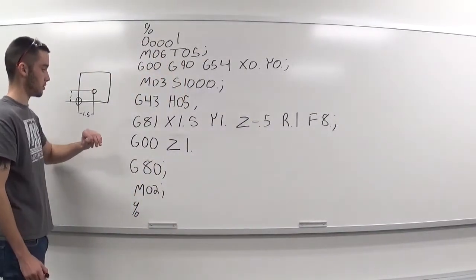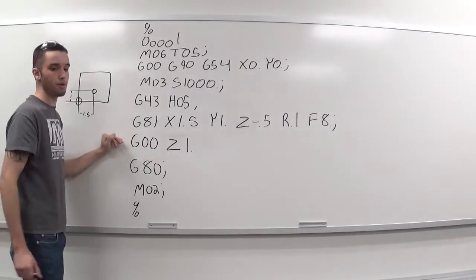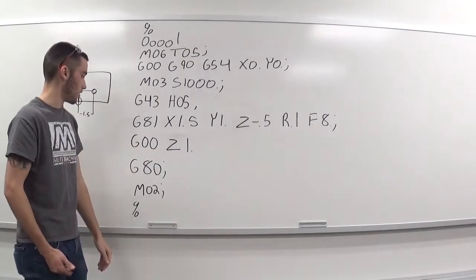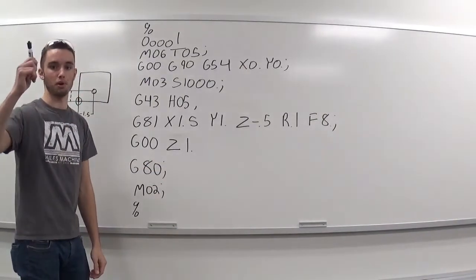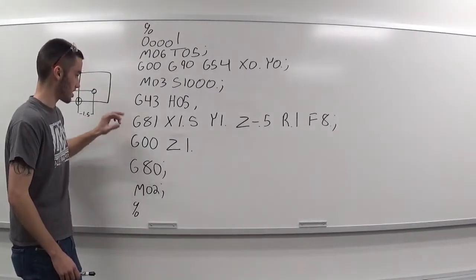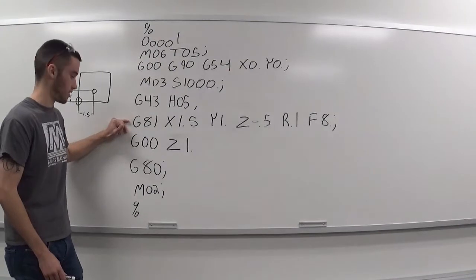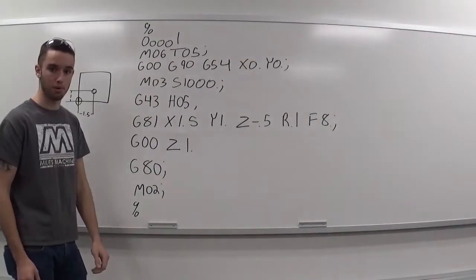Then we'll be doing G00, Z of 1 inch. This block code right here isn't necessary, but I just like to do it for safety reasons, just to make sure the drill is actually above the part before the machine moves. And then doing a G80, which is canceling the G81, the canned cycle, and M02, which is ending the program.